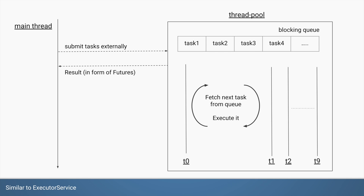Using the futures you can get the value computed for that particular task. In these two aspects, fork join pool is exactly the same as executor service — you submit the task, execute the task, and optionally get the return value from those tasks.